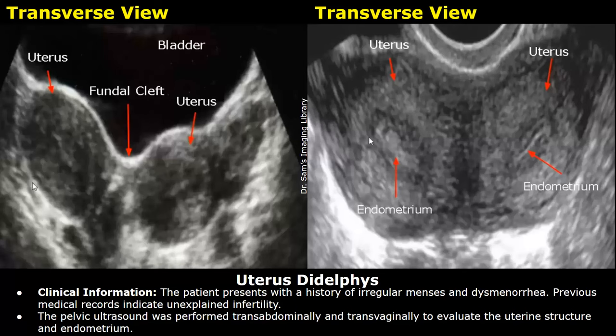The first anomaly is uterus didelphys, which is also known as double uterus. This is the example report, starting with clinical information. The patient presents with a history of irregular menses and dysmenorrhea. Previous medical records indicate unexplained infertility. The pelvic ultrasound was performed transabdominally and transvaginally to evaluate the uterine structure and endometrium.